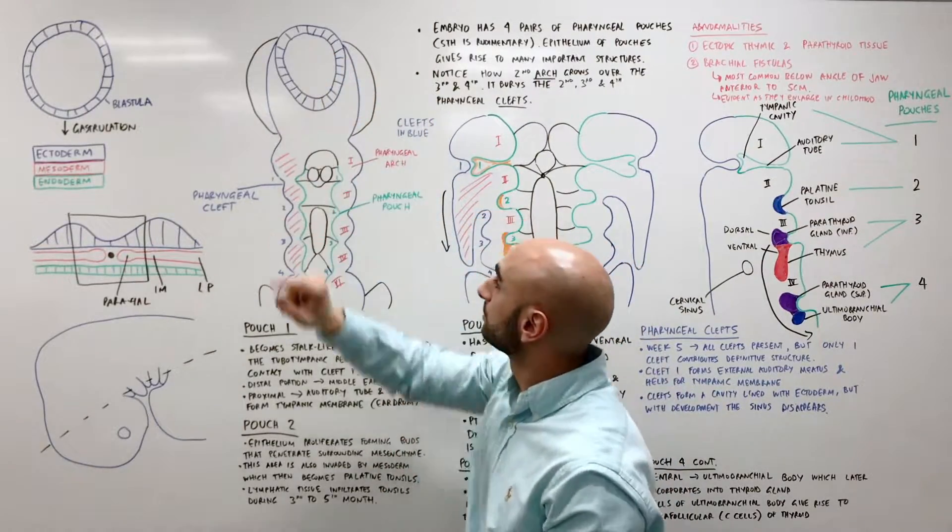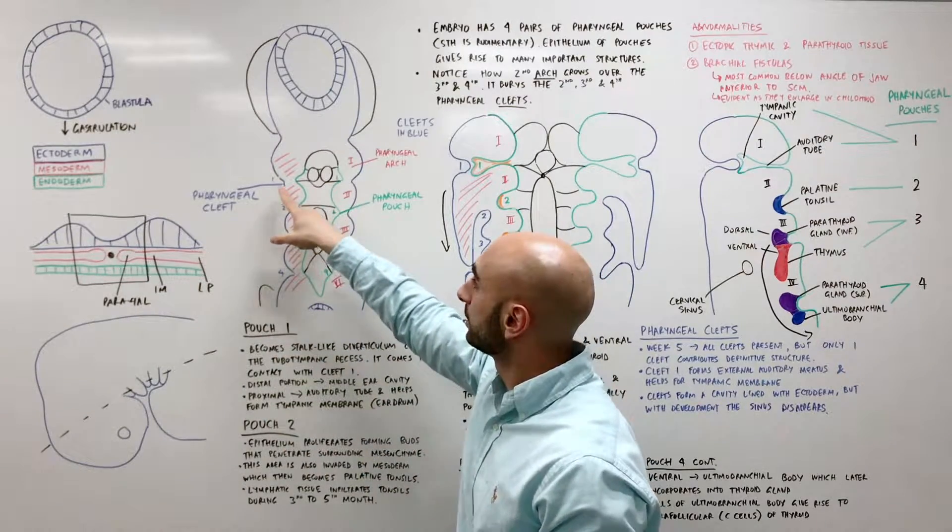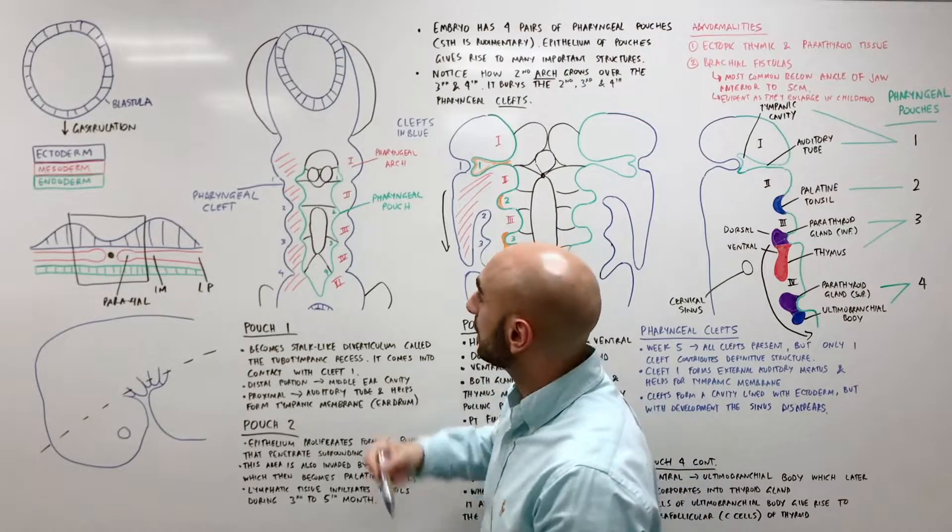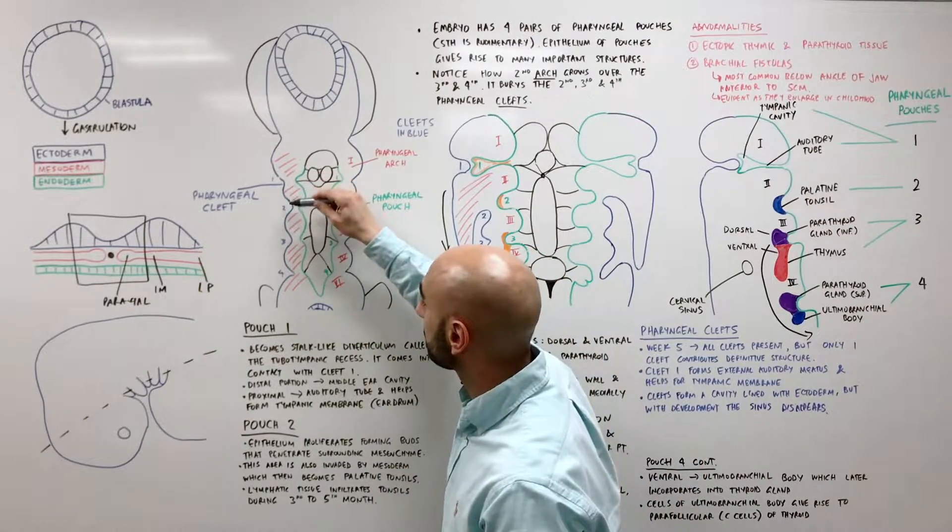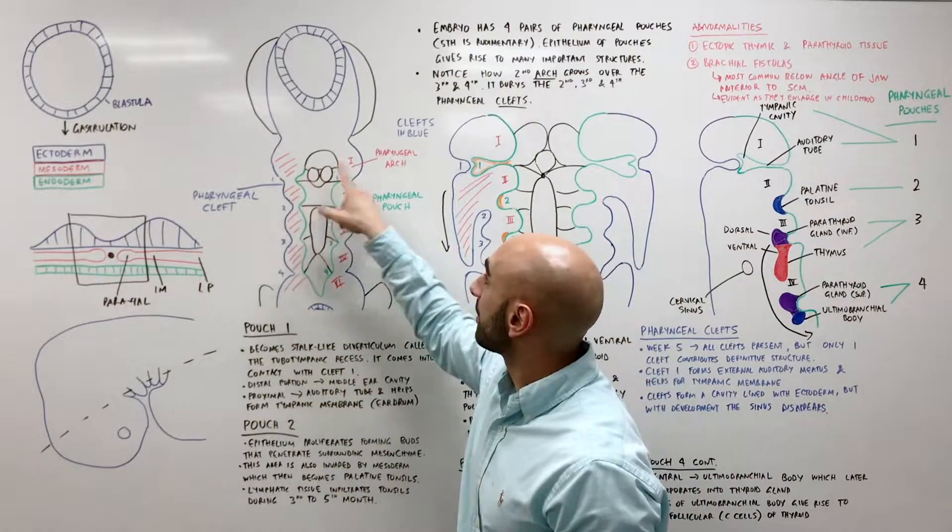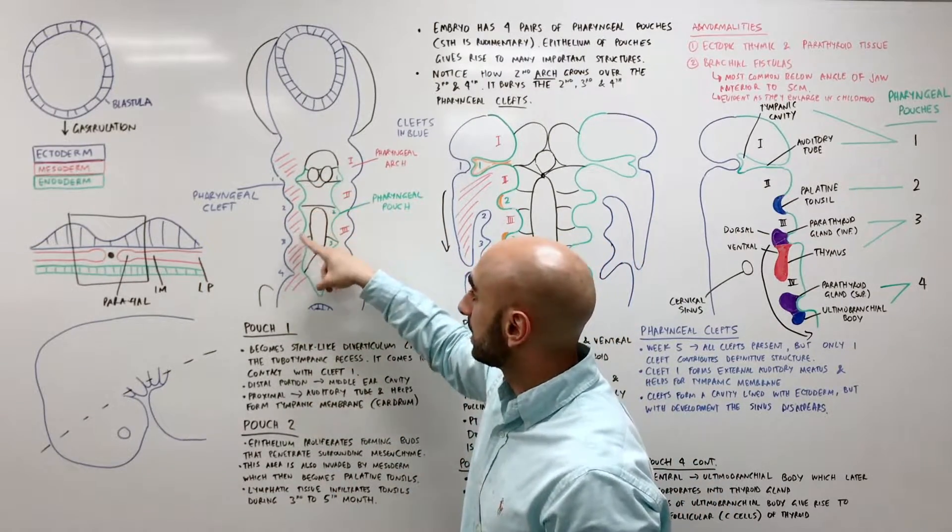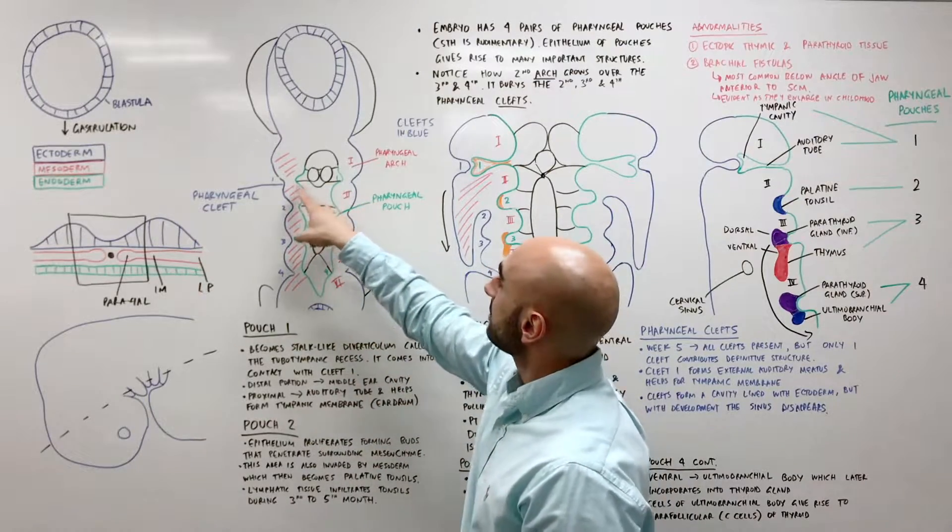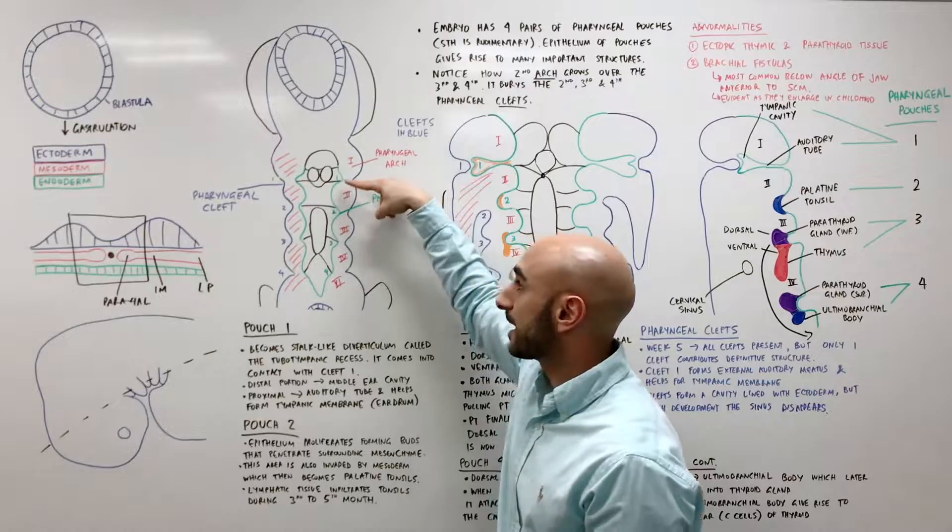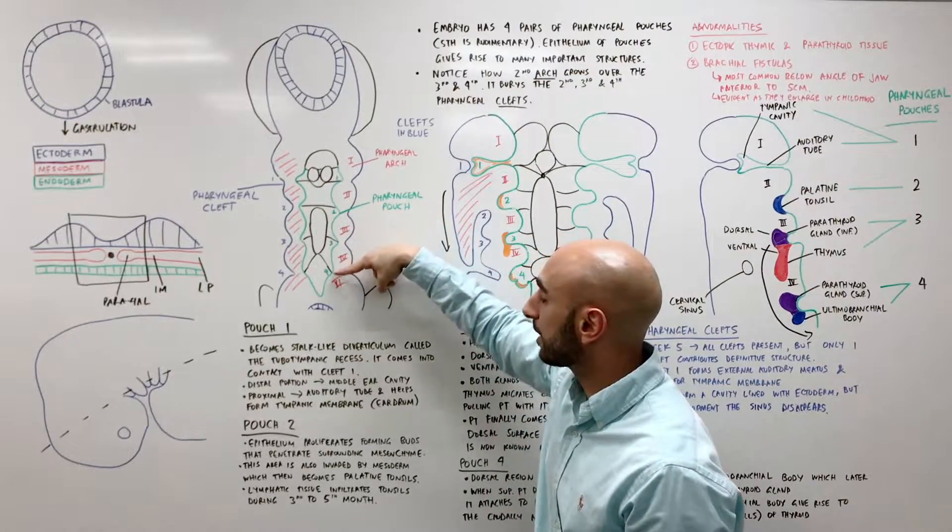That's the spinal cord and in blue we have the pharyngeal clefts. So each dip is cleft 1, cleft 2, cleft 3, cleft 4. In red are the pharyngeal arches, it's all the tissue in the middle.